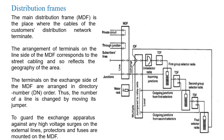The main distribution frame (MDF) is the place where the cables of the customer's distribution network terminate. The arrangement of terminals on the line side of the MDF corresponds to the street cabling and so reflects the geography of the area. The terminals on the exchange side of the MDF are arranged in directory number (DN) order.